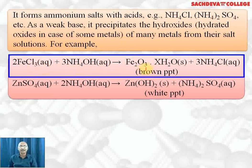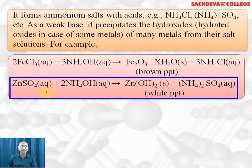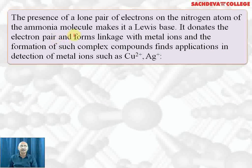Zinc sulfate can also be precipitated with ammonium hydroxide to form a white precipitate of zinc hydroxide plus ammonium sulfate. The presence of the lone pair of electrons on the nitrogen atom of the ammonia molecule makes it a nucleophile — it donates a pair of electrons and forms a coordinate bond with metal ions.